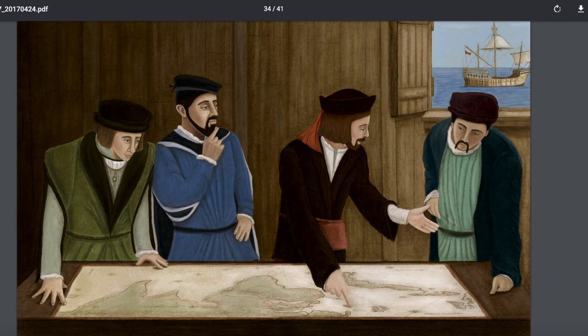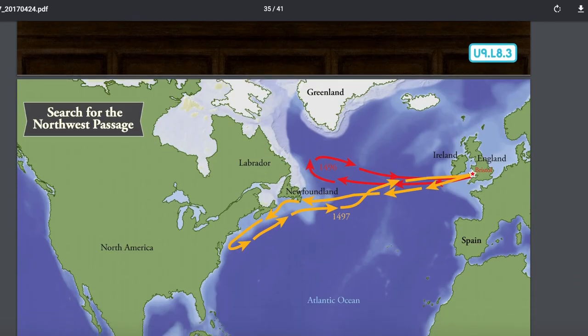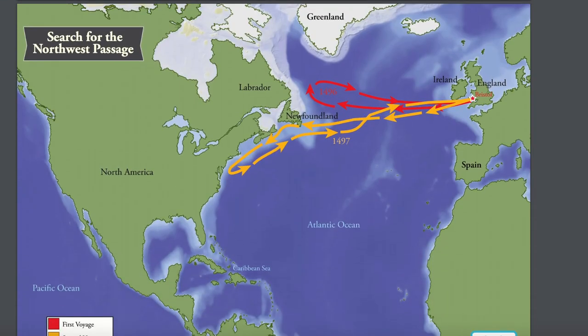Cabot attempted three voyages across the Atlantic. The first voyage, attempted from Bristol, England, was not a success. Cabot and his men encountered terrible weather and ran short on supplies. In addition, Cabot had some disagreements with his crew regarding his route. With all the misfortunes at the onset of the voyage, Cabot eventually decided to turn around and sail back to Bristol.